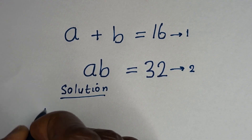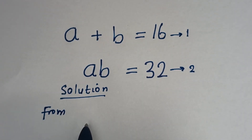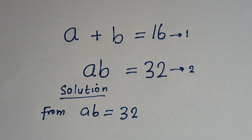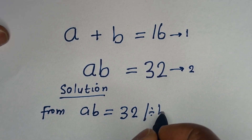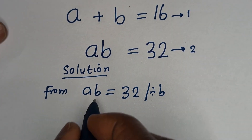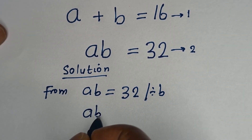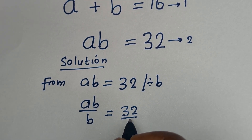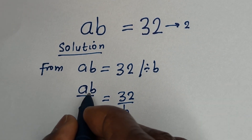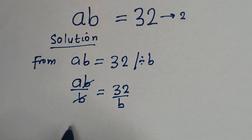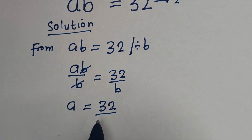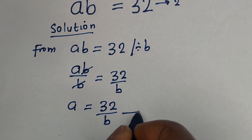Here, from equation 2, we have AB is equal to 32. Let us divide both sides of this equation by B. Then we have AB divided by B is equal to 32 divided by B. This B cancels with this B, so A is equal to 32 over B. Let us call this equation 3.